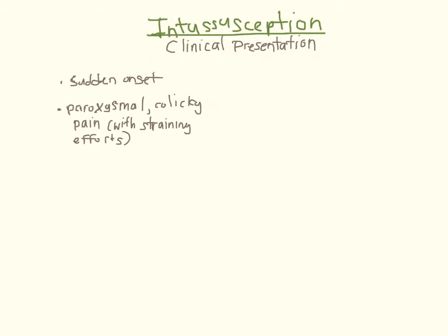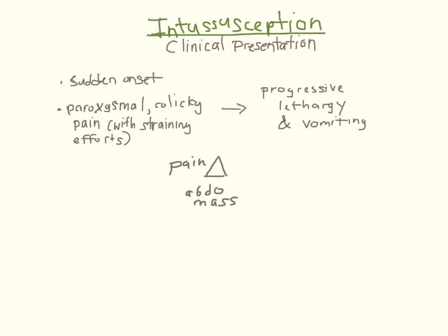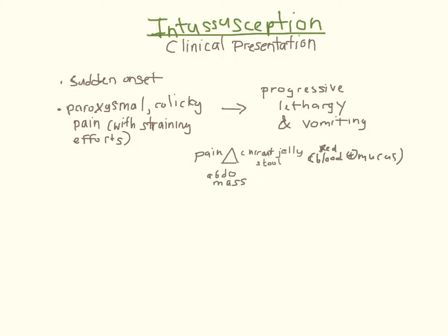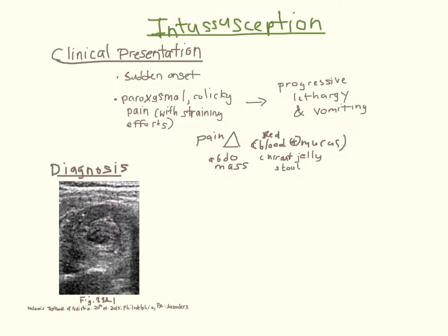Early on, it presents with sudden-onset paroxysmal colicky pain, with the infant often looking well between episodes. Episodes then become more frequent, and there is progressive vomiting and lethargy out of keeping with the abdominal findings. A palpable abdominal mass may be noted. Currant jelly stool only develops after edema and ischemia, so the classic triad of these features is now a rare occurrence. If intussusception is suspected and the patient is stable, an ultrasound should be ordered. A loop of bowel within another will appear either as a sausage-like mass or as a donut.